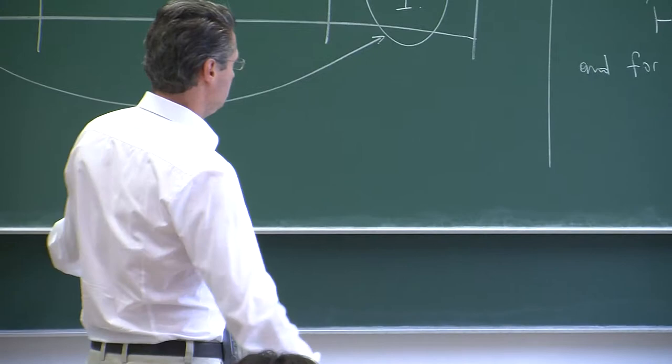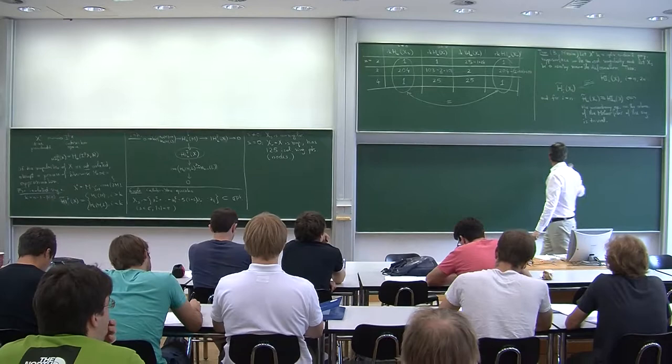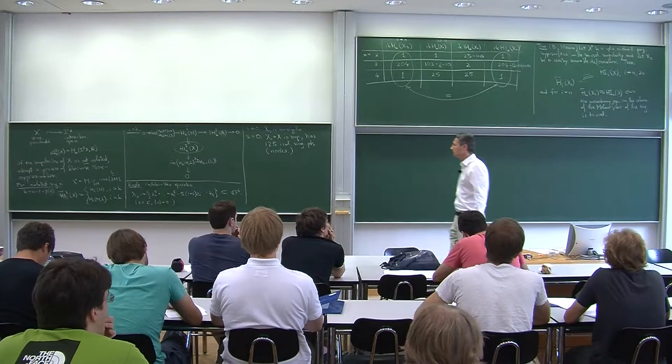This triviality holds in all the previous examples — for the Calabi-Yau quintic and the torus picture — but in general it is a serious assumption. For most singularities, the monodromy is not trivial. If it is not trivial, one has precise estimates on how these are related.